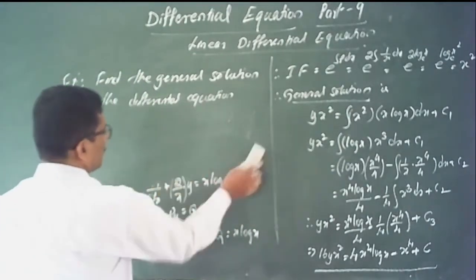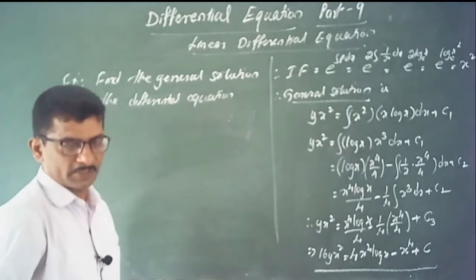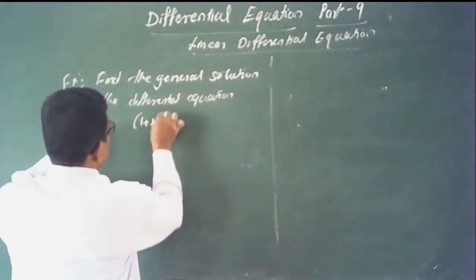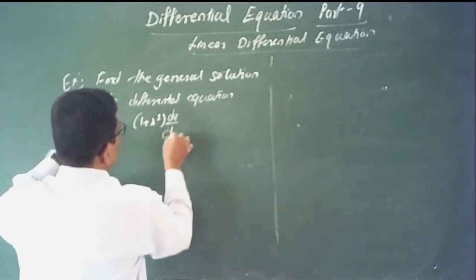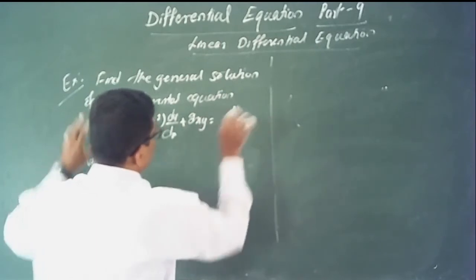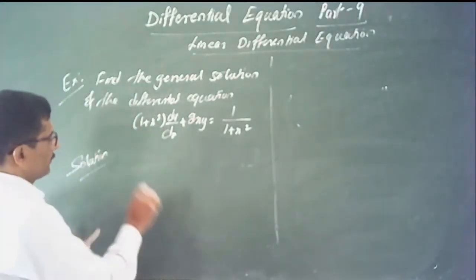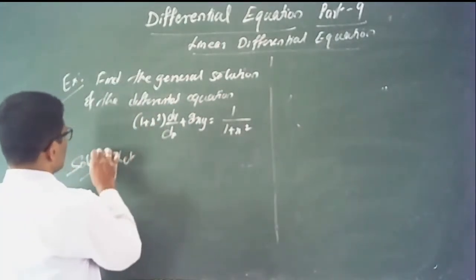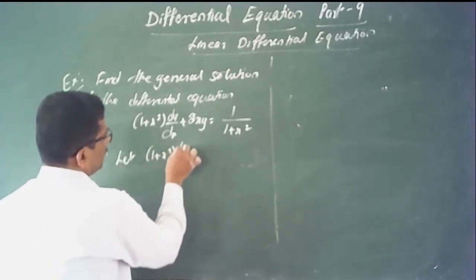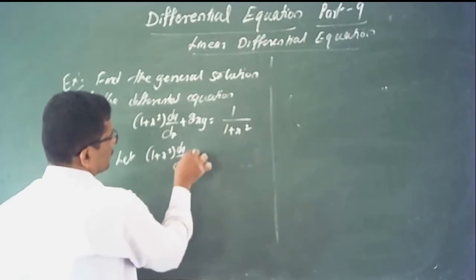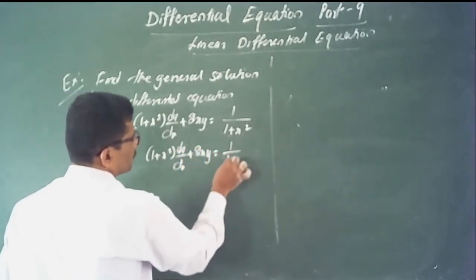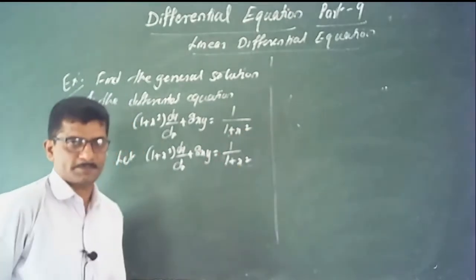One more problem: find the general solution of the differential equation (1 plus x squared) times dy/dx plus 2xy equals 1 divided by (1 plus x squared). Very simple problem.